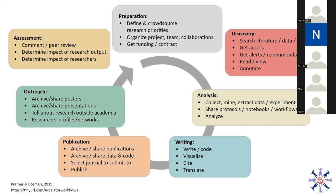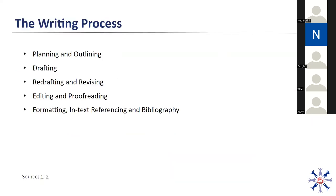Afterwards, you'll have three other stages left: publication, outreach, and assessment. Within the writing process, you plan and outline, you have your draft, you redraft and revise, you edit and proofread. Throughout your writing process, you look at your formatting and text referencing, and you build your bibliography.